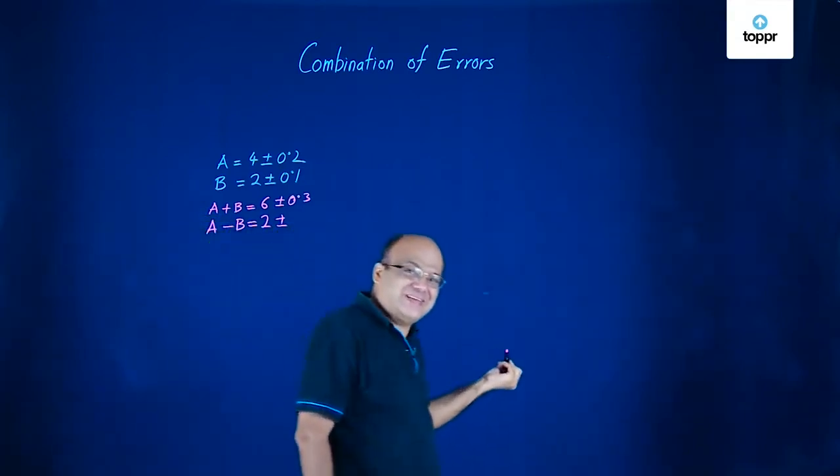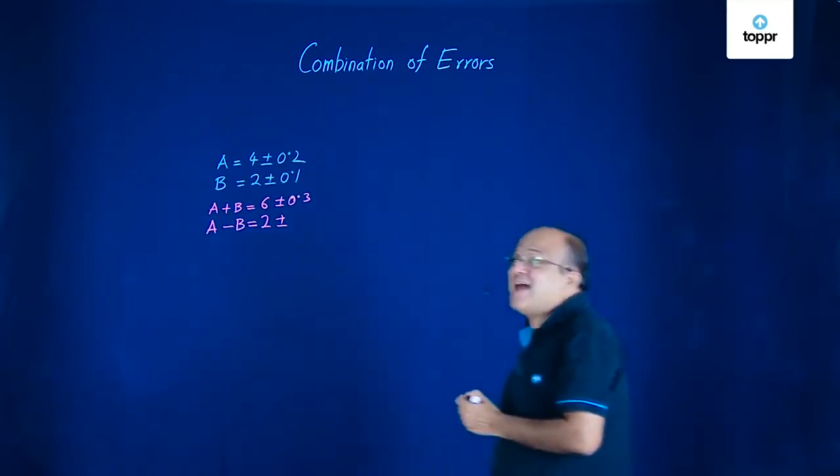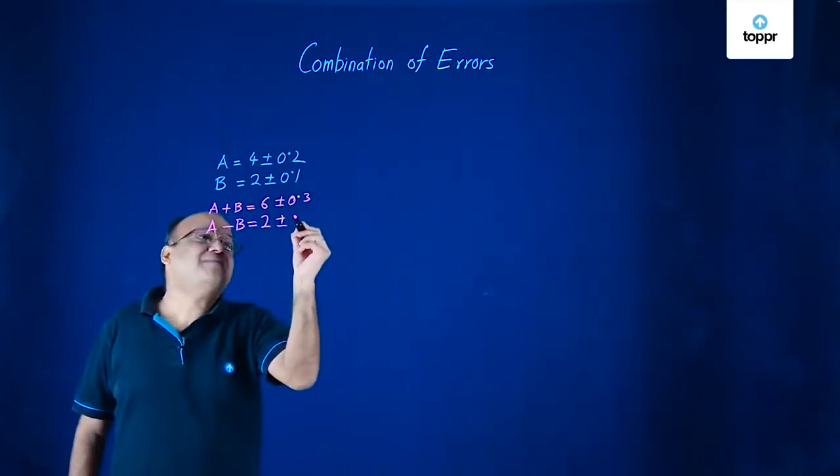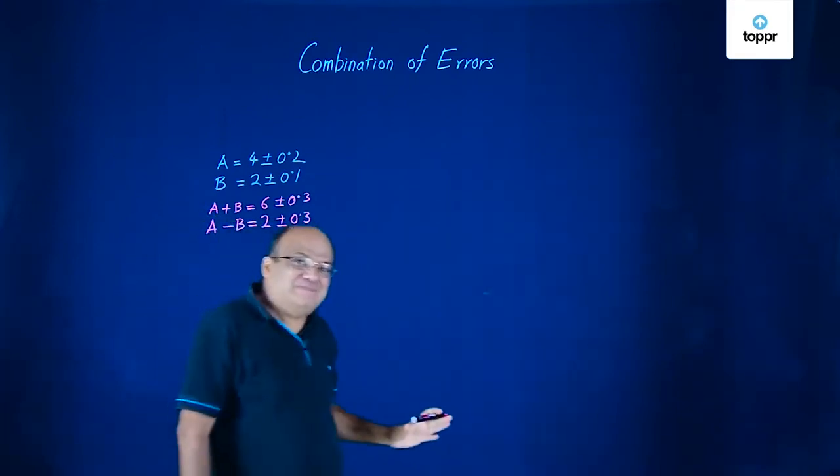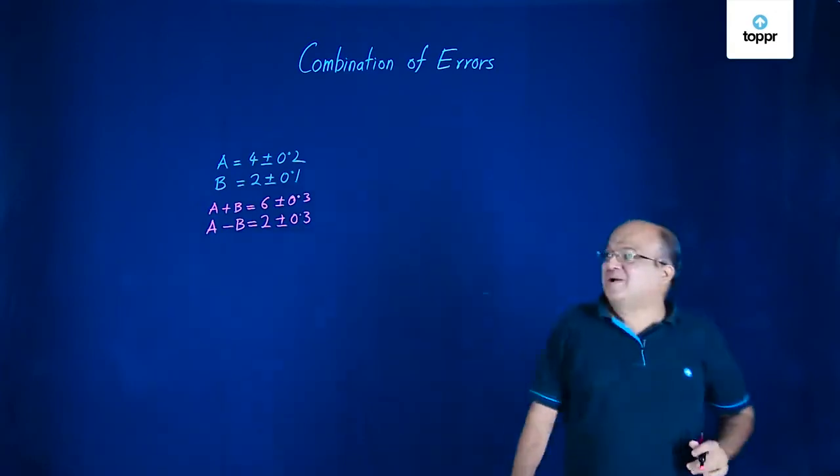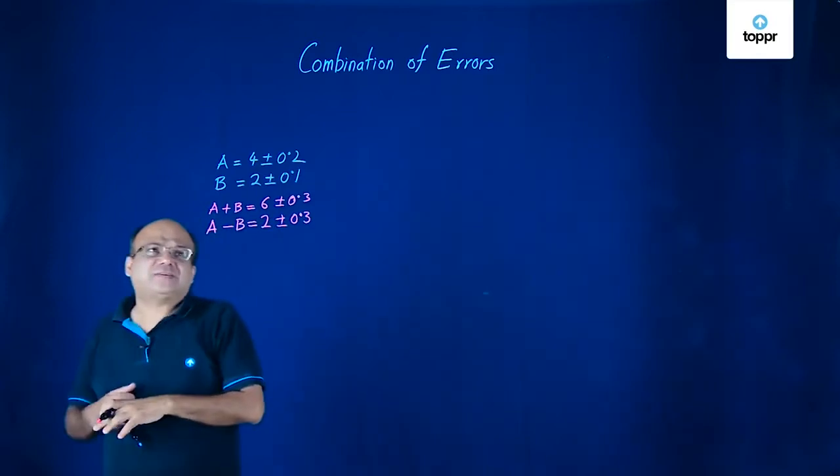No, not 0.1. Errors are never subtracted. Errors are always added. So you get again 0.3. Whether you like it or not, it will be 0.3, not 0.1. Because errors are always added, errors are never subtracted.